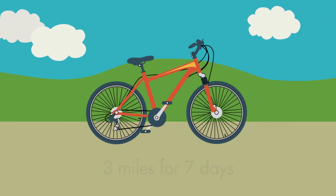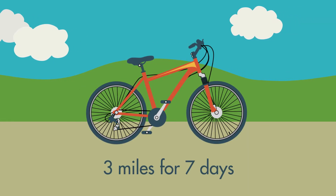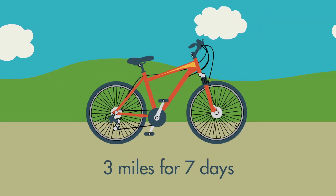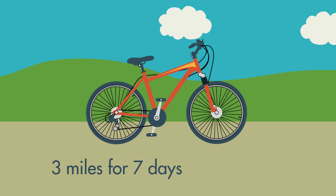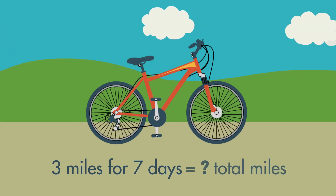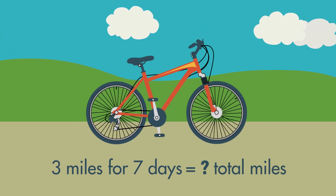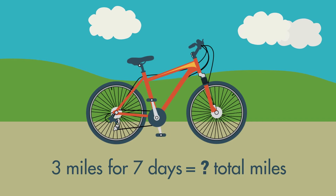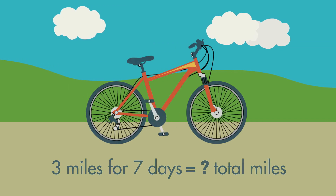Imagine you rode your bike 3 miles every day for a week. To find how many miles you rode in all, you can add or multiply. Let's draw a picture of the problem. Draw a group of 3 dots to show that you rode 3 miles in a day. There are 7 days in a week, so draw 7 groups of 3 dots.